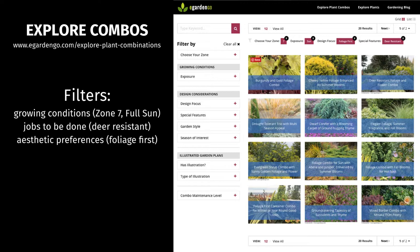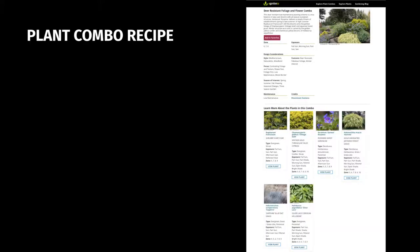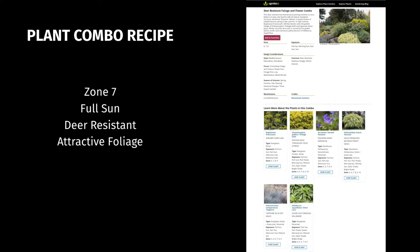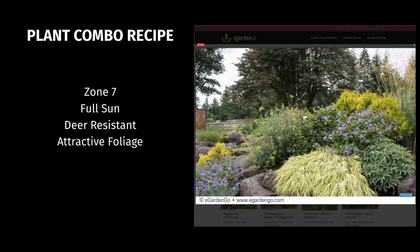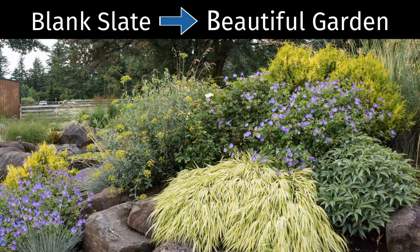We identify a number of options and take a closer look at one. Clicking through, we get the details — this combo meets all the criteria we laid out, and there's even an in-ground example of it planted out in a garden setting. Examining the combo detail, we get the full recipe for this planting combination that includes six plants. The result: our customer has a roadmap to success, a confident customer with a plan of action, which usually results in a larger sale or a smoother design process.